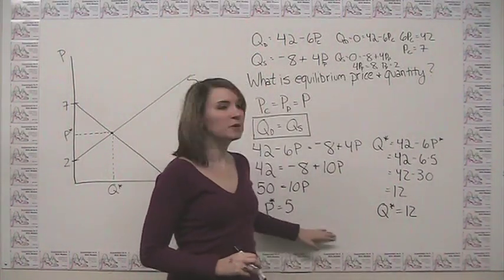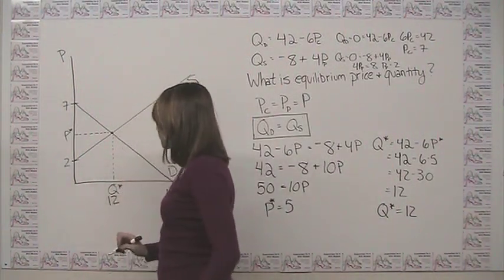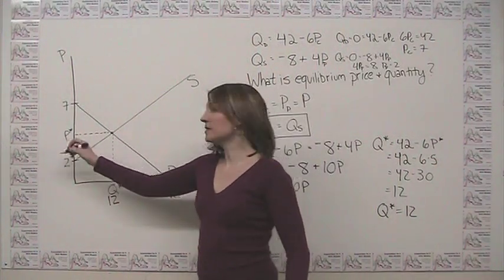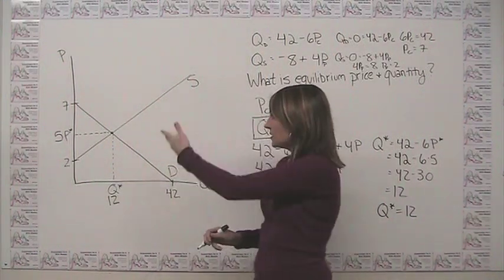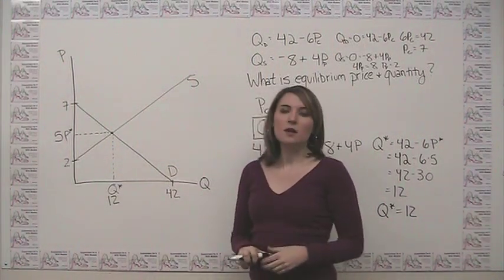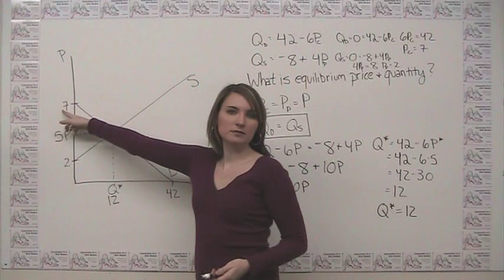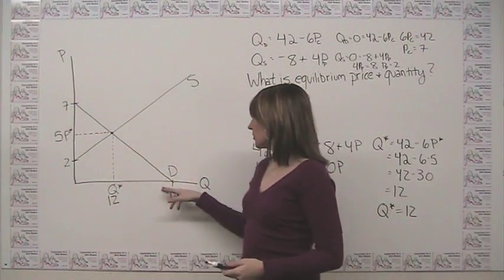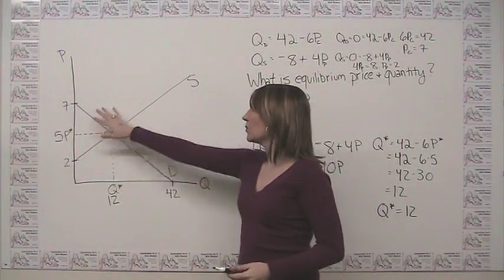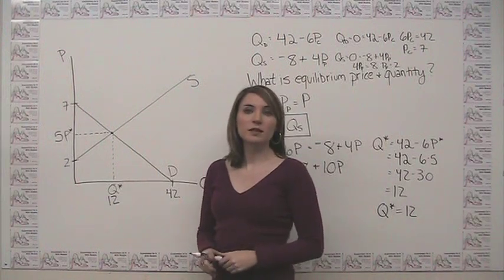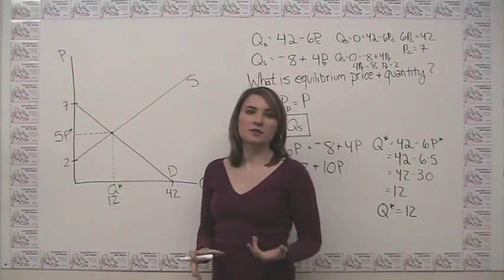What this means on our graph is if we were to label these, that this point here is the point 12, and this point here is the point 5. And we can look at this and say, granted, our graph is not drawn to scale, but this makes a lot of sense because we were looking for a price that we knew had to be between 2 and 7, which 5 is. And we were looking for a quantity that's less than 42, which 12 is. So going back and looking at what's reasonable in terms of your equilibrium price and quantity can be helpful in case you make a math error and get something that just doesn't make sense in terms of your graph. You'll be able to catch it sooner rather than later.